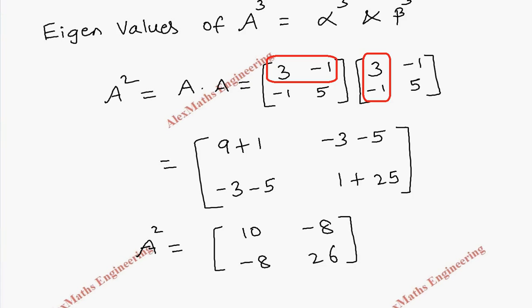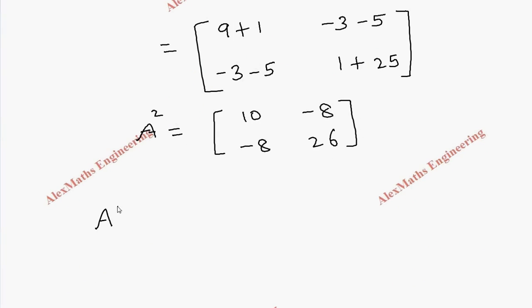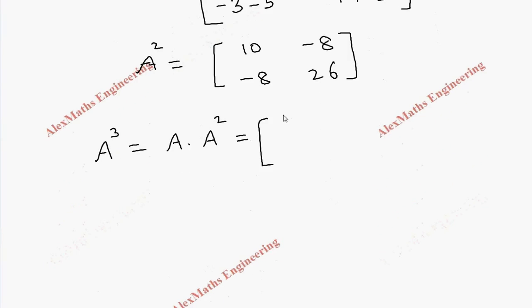Now we need A cube. A cube is nothing but A into A square. And A is given in the question, which is 3, minus 1, minus 1, 5. And A square is 10, minus 8, minus 8, 26.